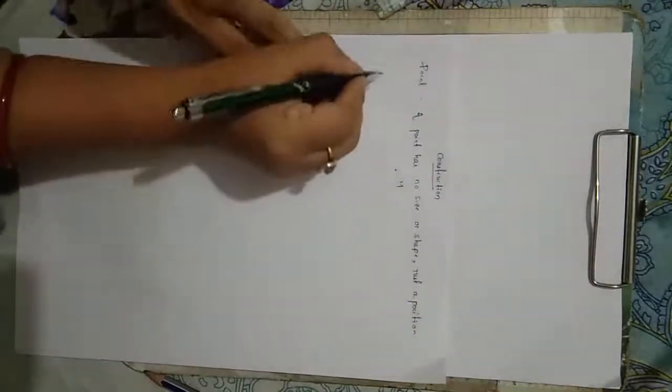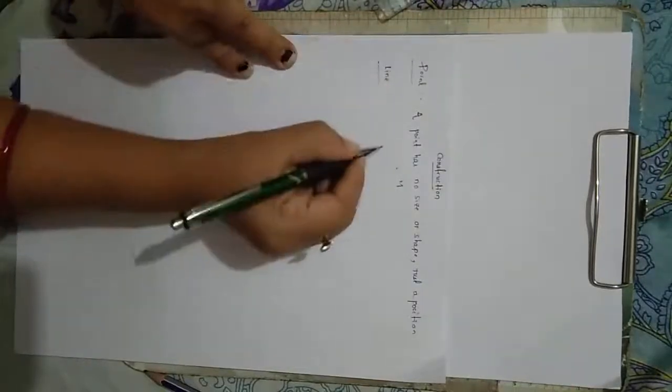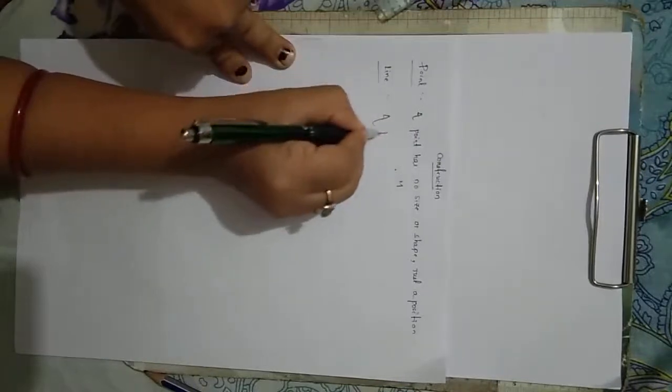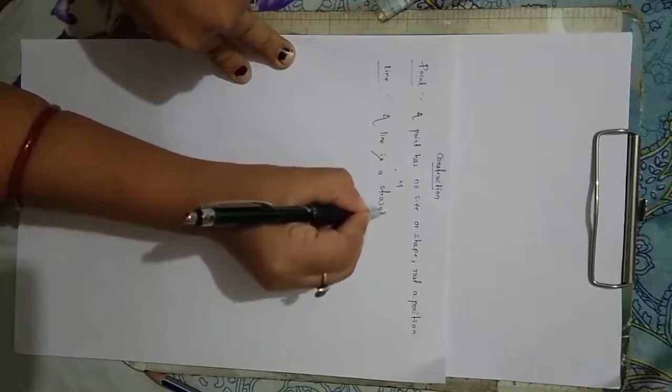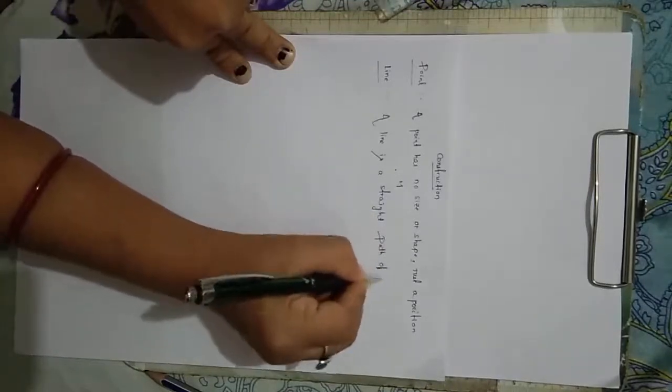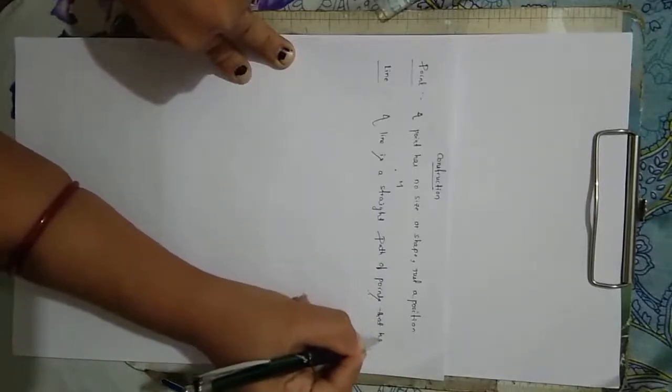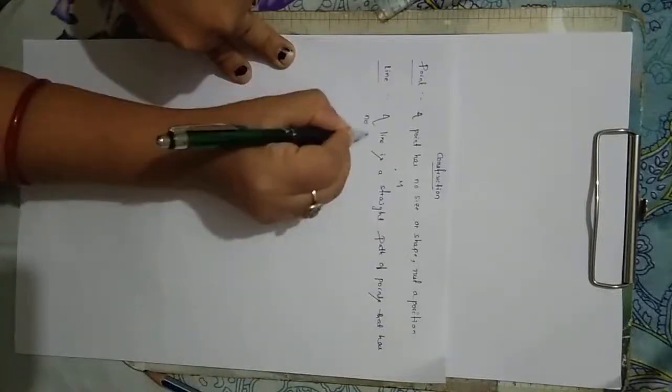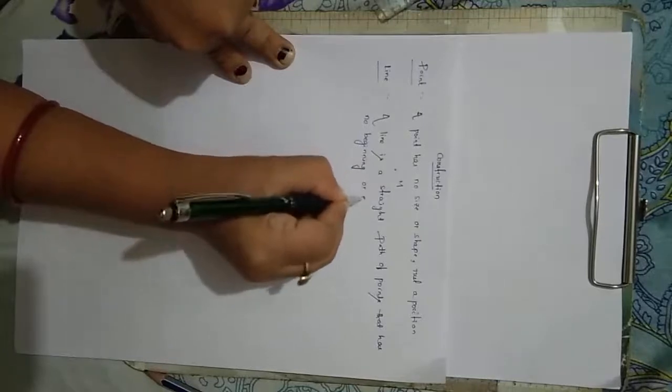Then, line. What is line? A line is a straight path of points that has no beginning or end. That is called a line.